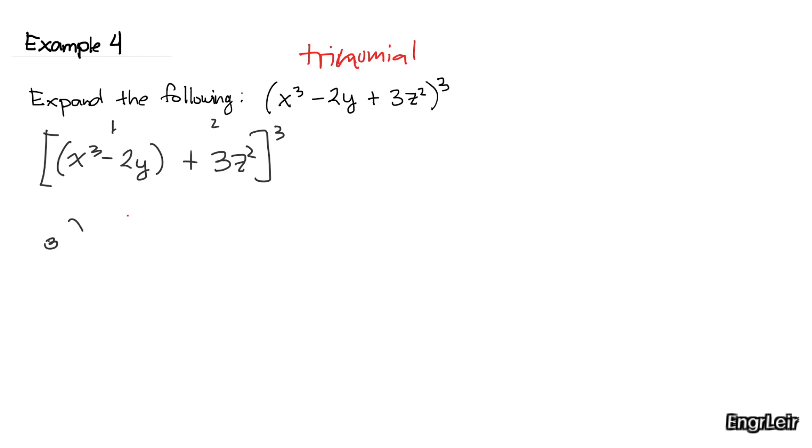We have 3 taken 0 times x cubed minus 2y raised to 3, 3z squared raised to 0, plus 3 taken 1 and so on.